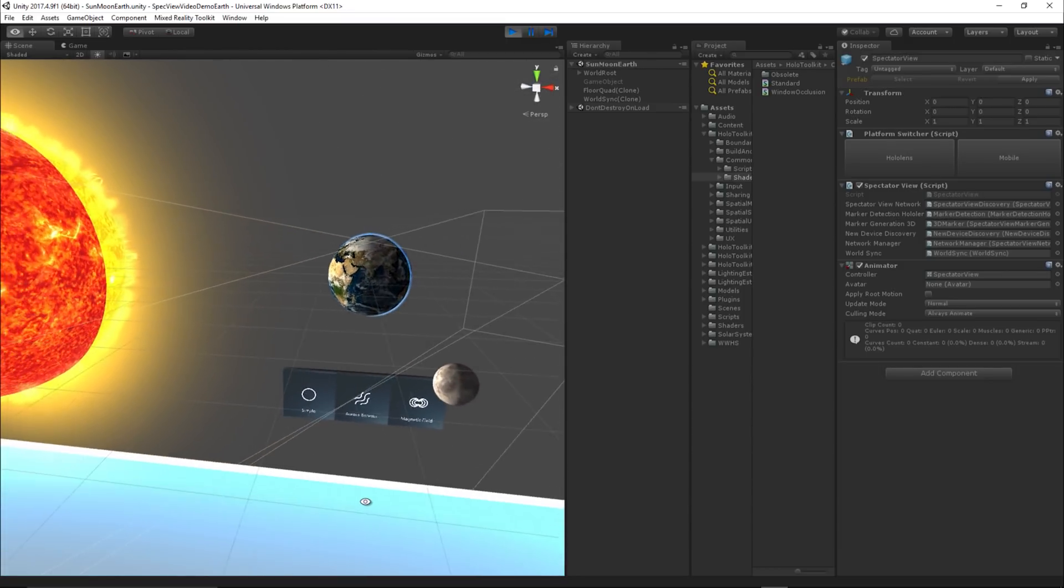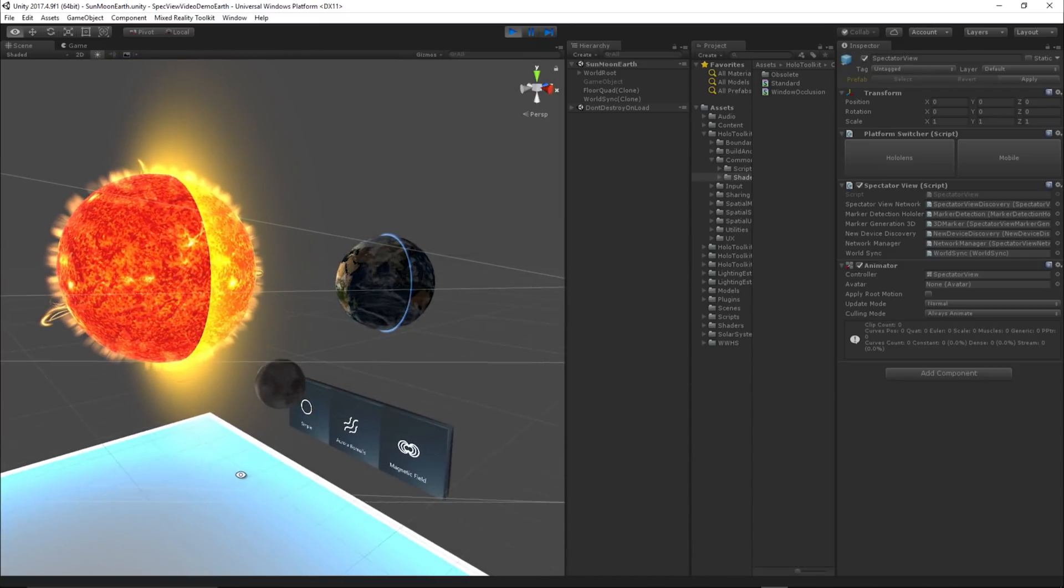Customize the Unity scene as needed and then deploy your app to the HoloLens and mobile devices. Launch the app on each device.